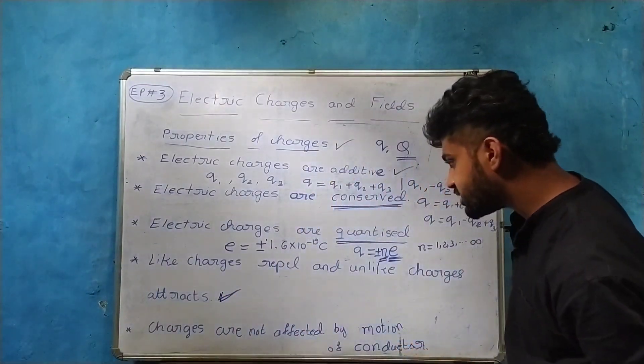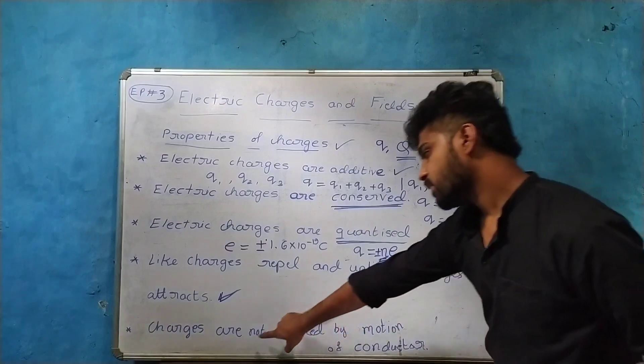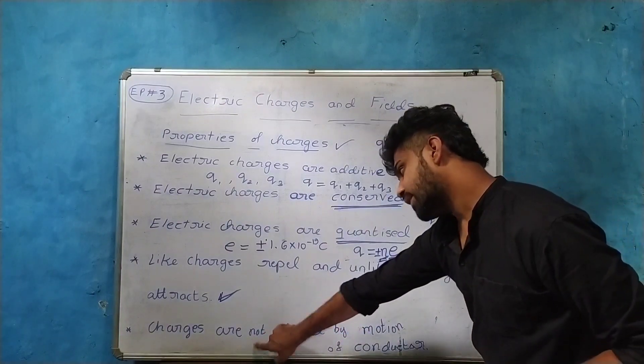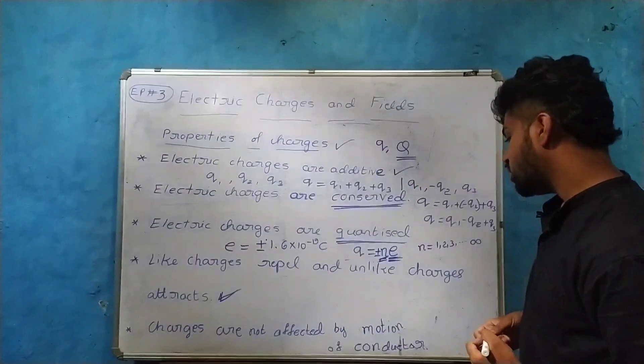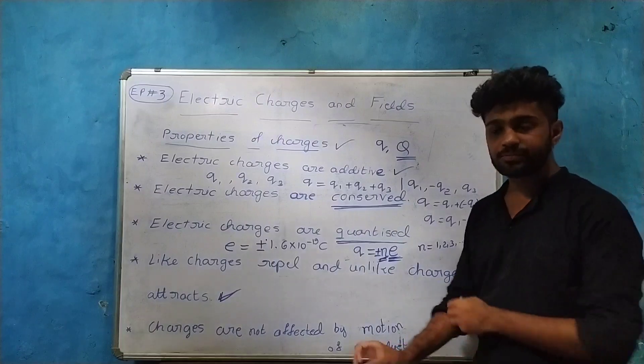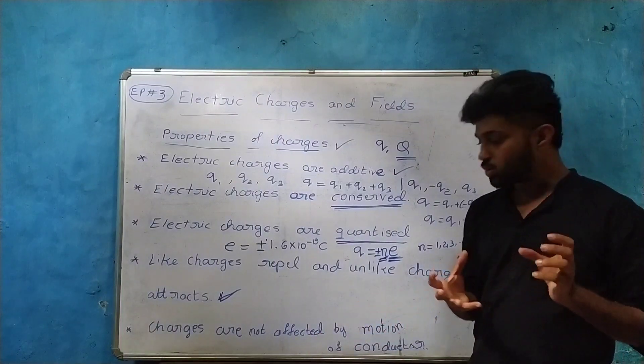The next property states that charges are not affected by the motion of a conductor. Even if an object is moving, the charge on it does not change.